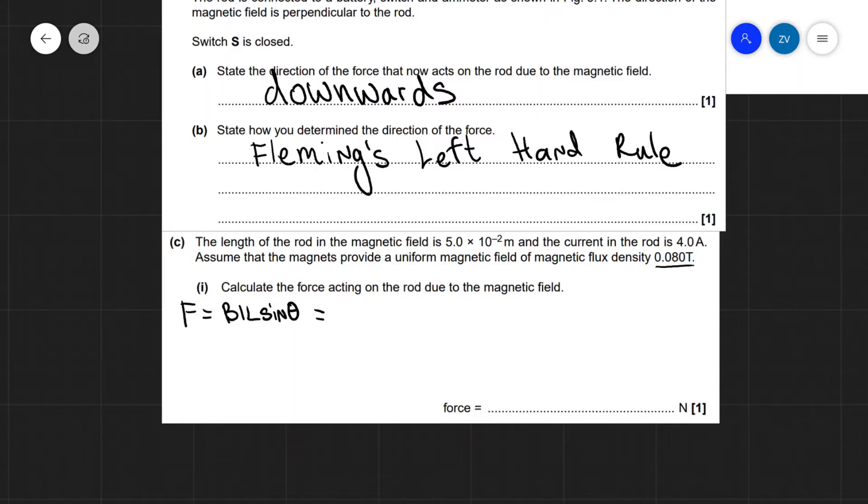So our flux density is 0.08 multiplied by the current, which is 4.0 amps, multiplied by the length, which is 5.0 × 10^-2 meters, times the sine of 90, which is just 1. And this will equal 0.016 newtons when calculated with a calculator.